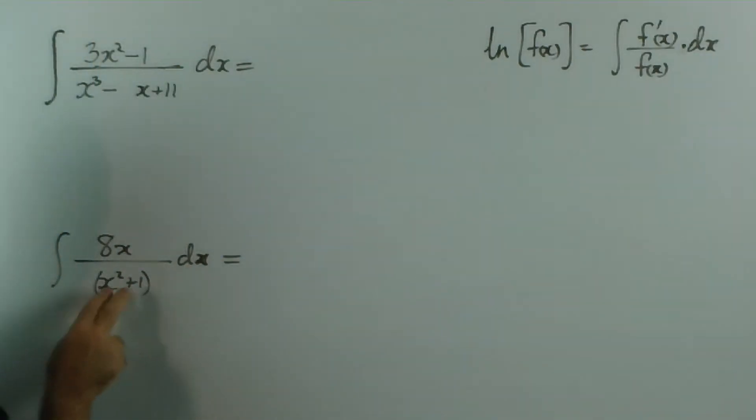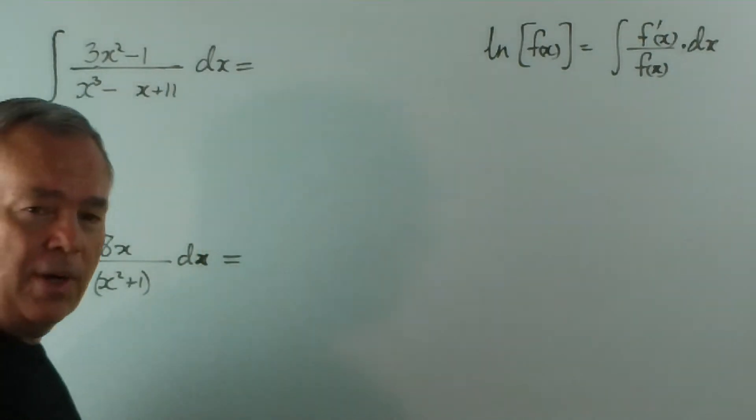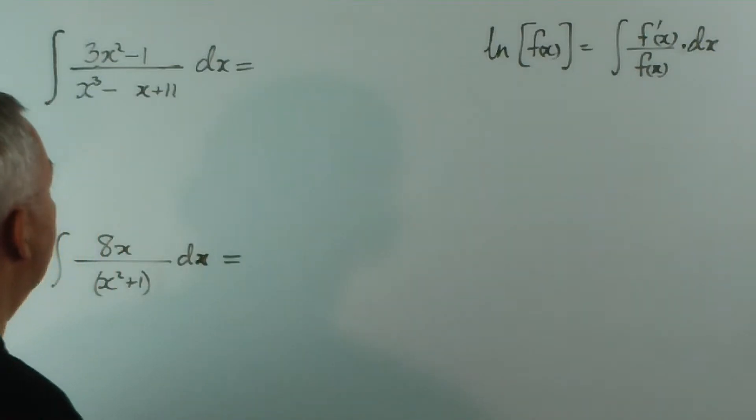This one here, the derivative of x² + 1 is 2x. And here we have an x function on the top, we'd rather have a 2 than an 8, so we need just a tiny adjustment. But this also is very close to this pattern. So let's integrate both of these expressions.